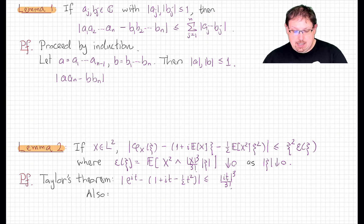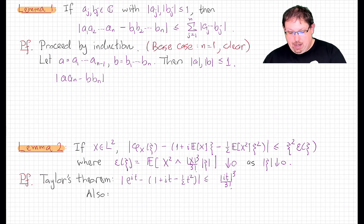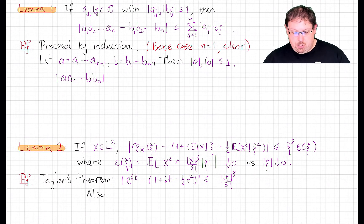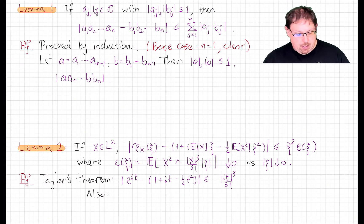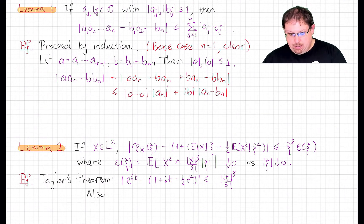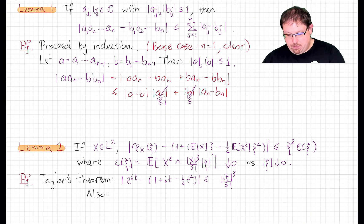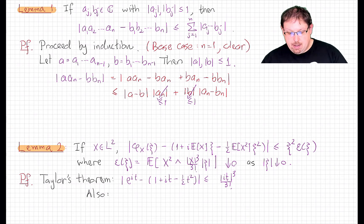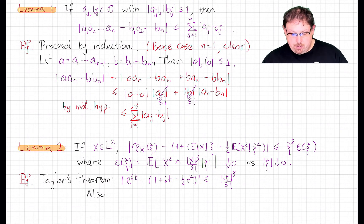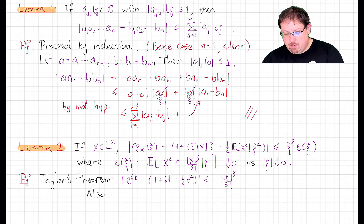Proving that is a simple induction argument. The base case when n equals 1 we actually get equality, so that's clear. For the n case, we write the product of the n terms as the product of the first n minus 1 times the last one, and look at that difference using the usual trick of adding and subtracting a middle term. Using the triangle inequality and collecting like terms: a_n is at most 1 in absolute value, and the product of n minus 1 terms each at most 1 is also at most 1. So this is less than or equal to the modulus of a minus b plus the modulus of a_n minus b_n, and by the inductive hypothesis that first term is bounded by the sum of |a_j - b_j| up to n minus 1, completing the proof by induction.